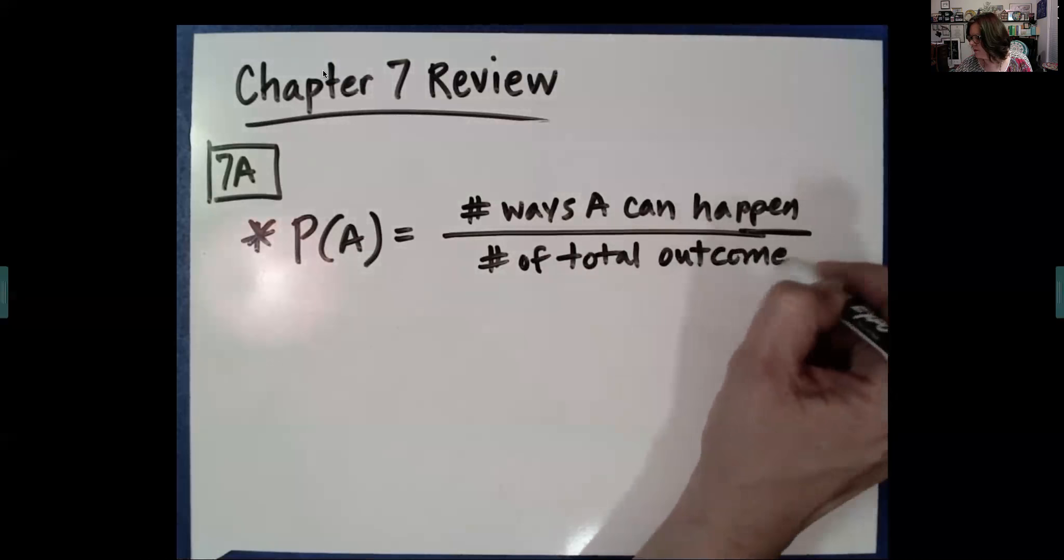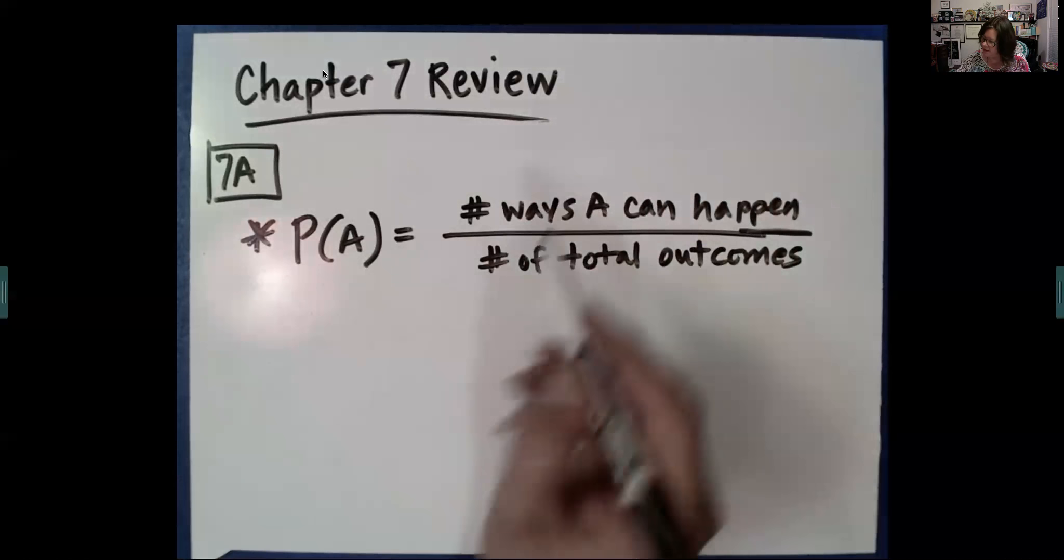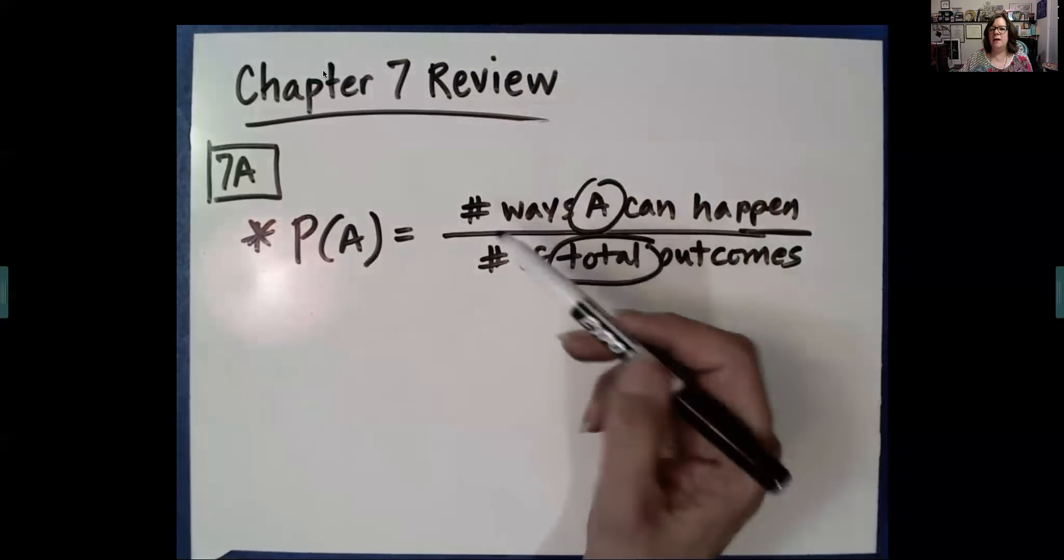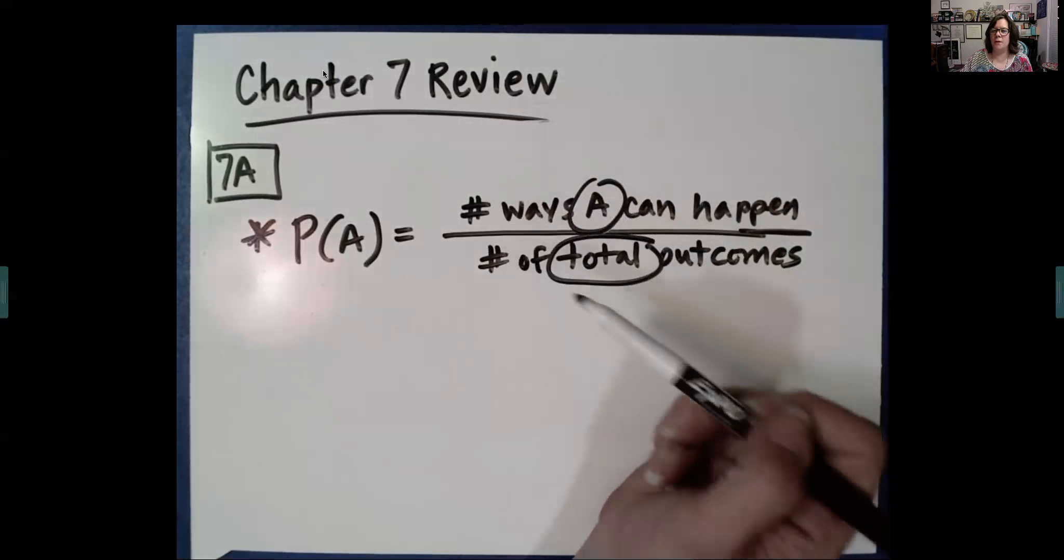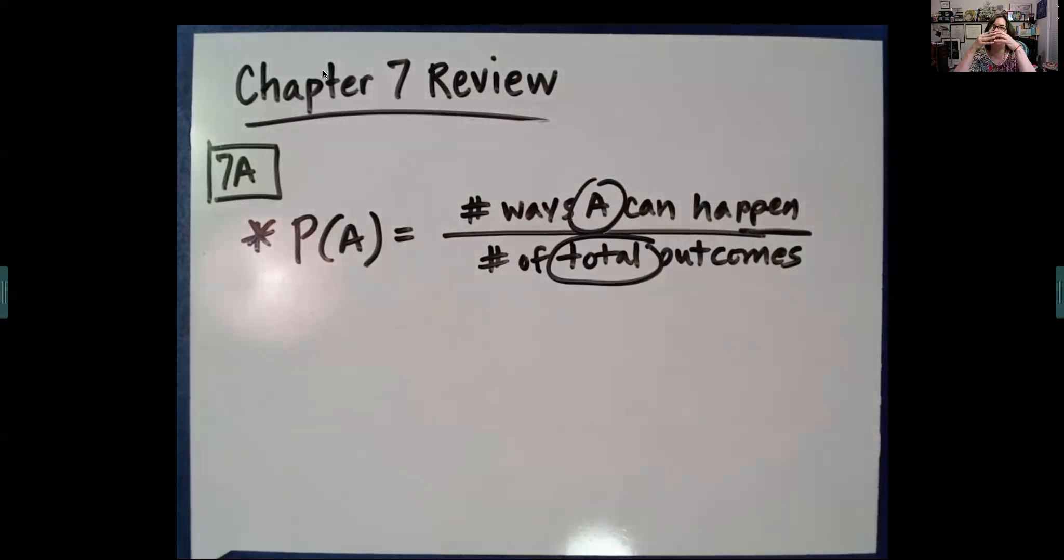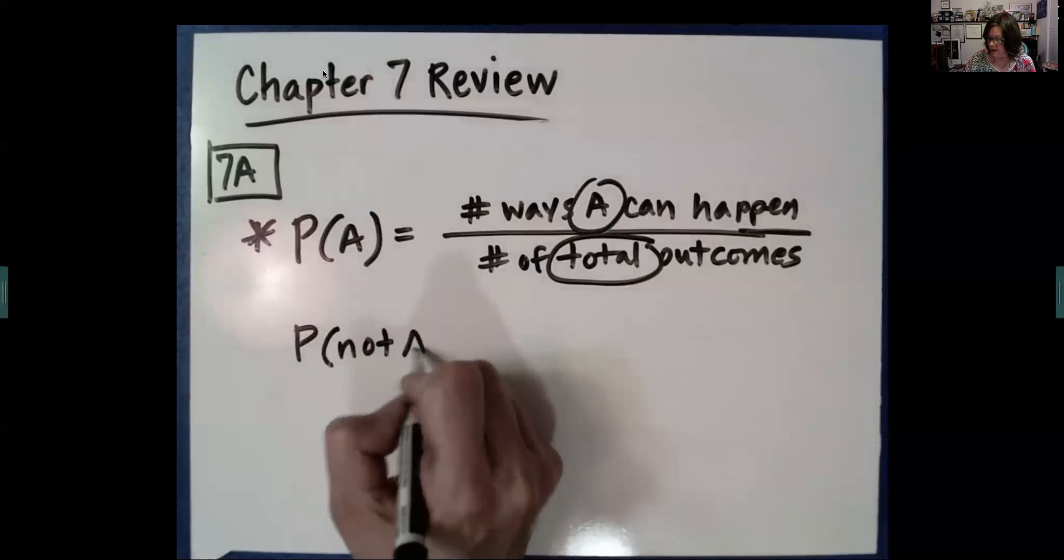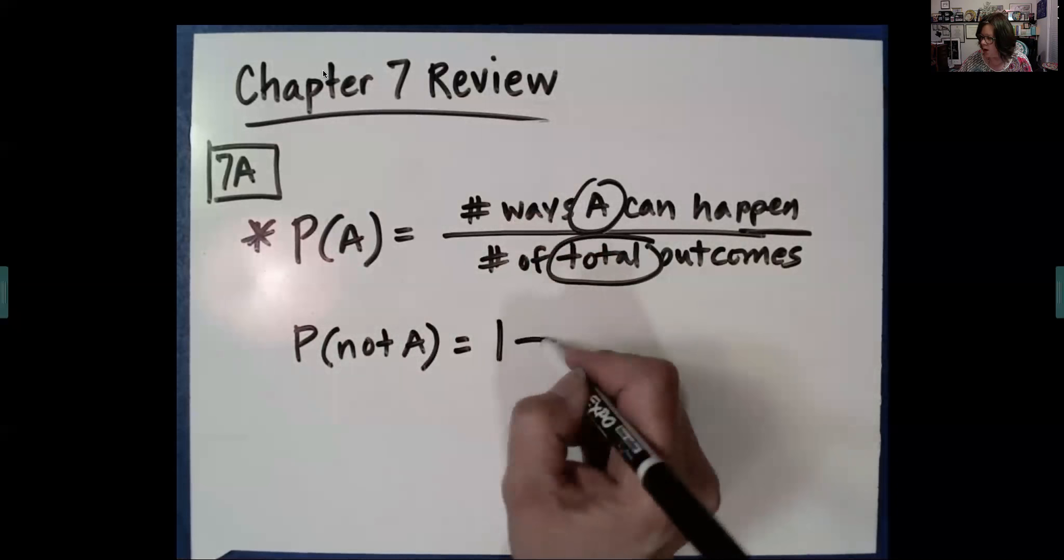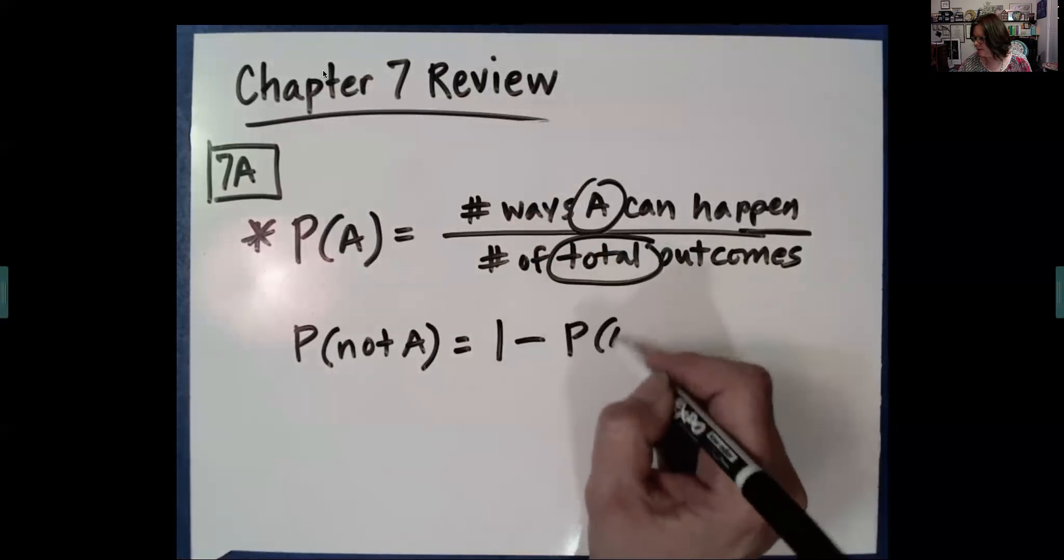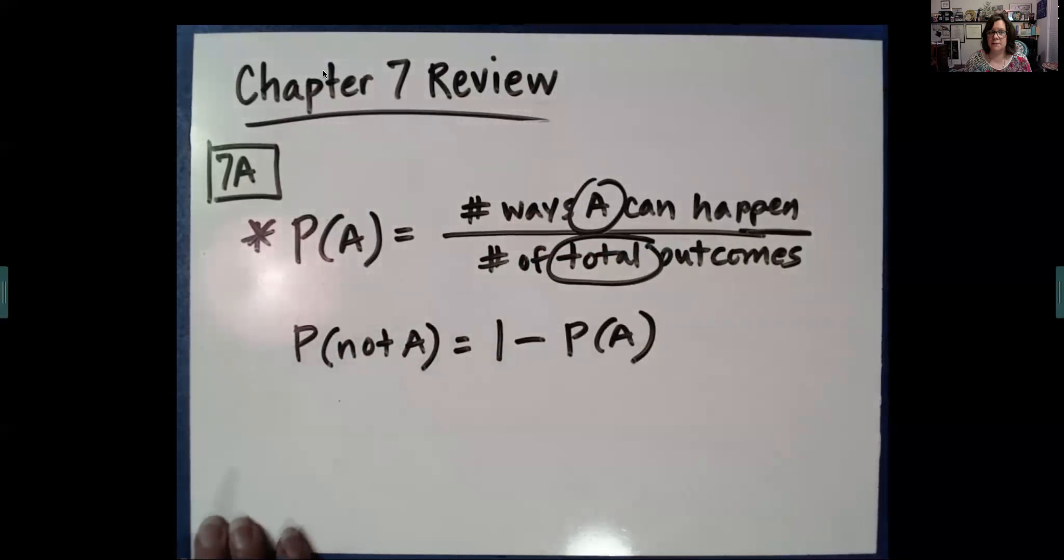Now, this is theoretical. So experimental would essentially be the number of ways A did happen over the number of trials or the number of observations. So it's basically how many A and then how many total. We got the idea that the probability of A not happening, with the idea that either it happens or it doesn't, is one which is 100% minus the probability of A happening. Sometimes it's easier to figure out a probability by using this.